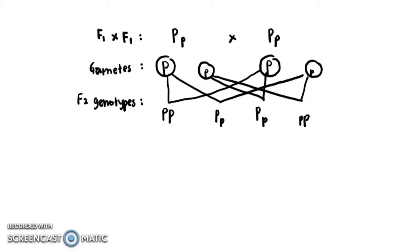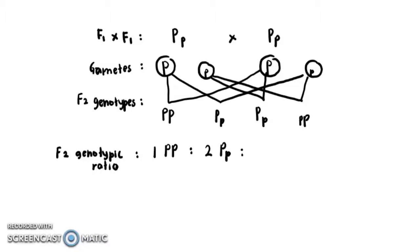The question wants you to show the F2 genotypic and phenotypic ratio. For the genotypic ratio: from the F2 genotypes you have 1 PP (homozygous dominant) : 2 Pp (heterozygous) : 1 pp (homozygous recessive). This is the genotypic ratio.